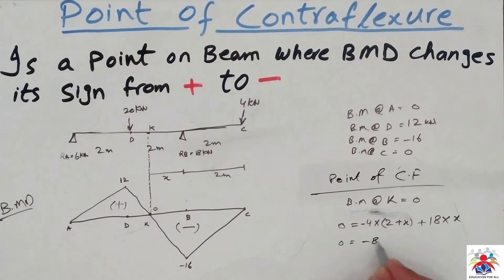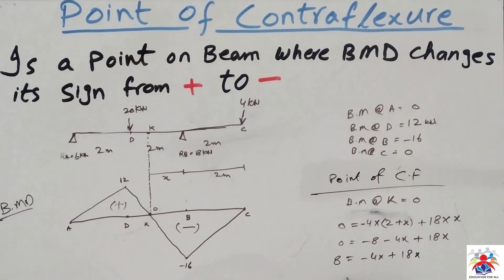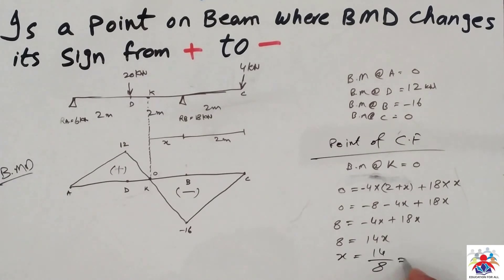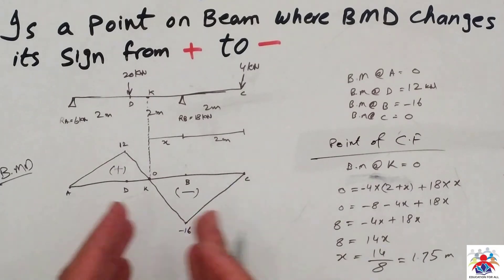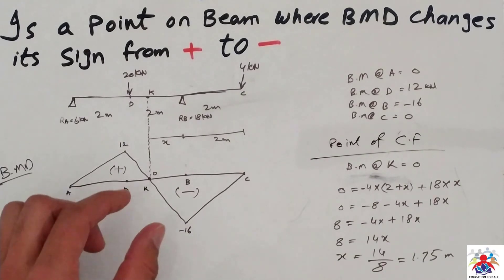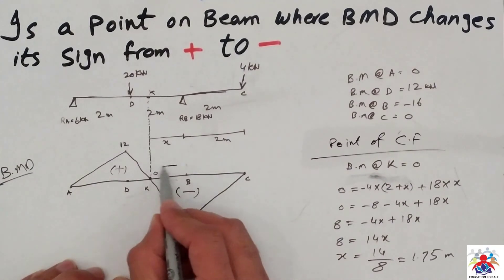Simplifying: 0 = minus 8 minus 4x plus 18x. Bringing 8 to the other side gives 8 = 14x, so x = 8/14, which equals 1.75 meters. Therefore, the point of contraflexure is 1.75 meters away from point B.